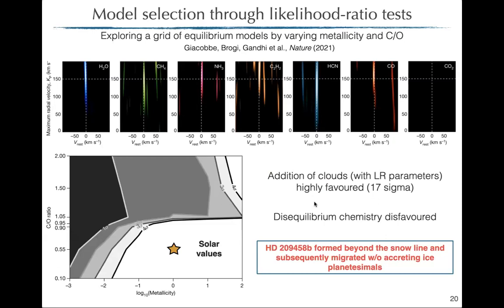Applying this likelihood to HD 209458b: we created a grid of equilibrium models varying metallicity and C/O ratio, and were able to select a specific region of the parameter space — consistent with sub-solar metallicity and slightly super-solar C/O ratio, though with large confidence intervals. We could also test whether adding clouds with low-resolution prescriptions improved model significance (it did), and whether disequilibrium models were favored (they were not). These constraints inform planet formation and early evolution scenarios.